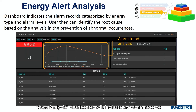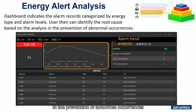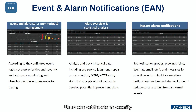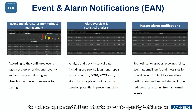The analysis dashboard will indicate the alarm records categorized by energy type and alarm levels. Users can then identify the causes based on the analysis to prevent abnormal occurrences. For the EGN that supports 50 machines, it also provides the EAN application. Users can set the alarm severity and notification groups of events, as well as automate monitoring and visualization of event processes to reduce equipment failure rates and prevent capacity bottlenecks.